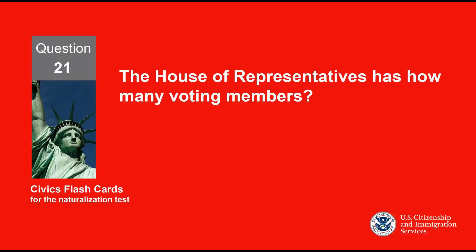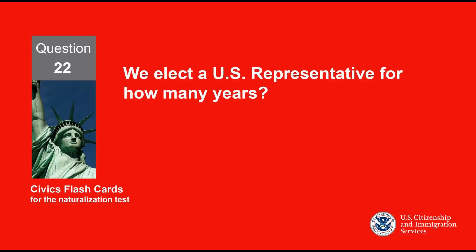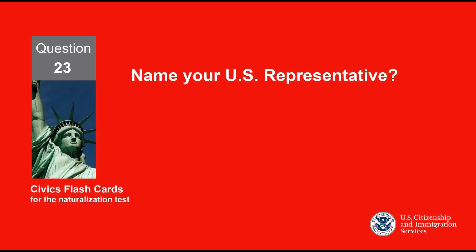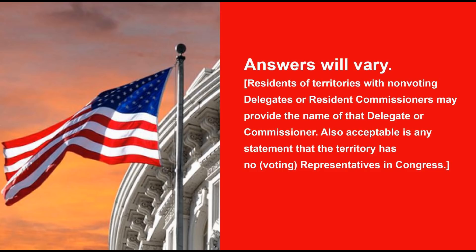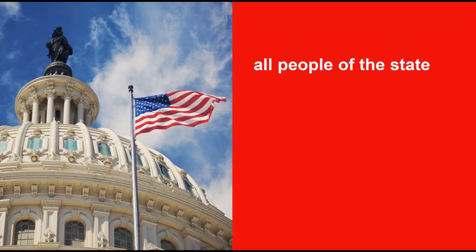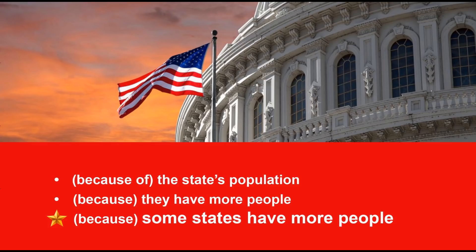The House of Representatives has how many voting members? Four hundred and thirty-five. We elect a U.S. representative for how many years? Two years. Name your U.S. representative. Answers will vary. Who does a U.S. Senator represent? All people of the state. Why do some states have more representatives than other states? Some states have more people.